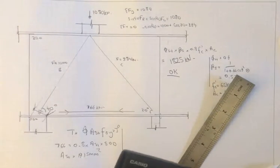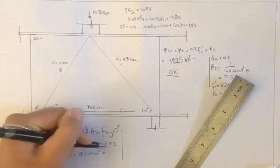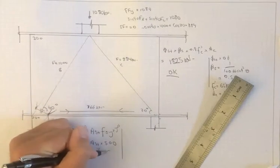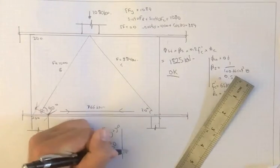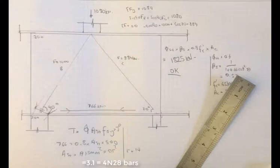Say we're going to have maybe N28s here. AST equals pi R squared, R being 14 for N28, which works out to be 3.1 bars,